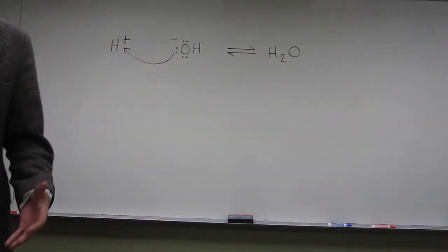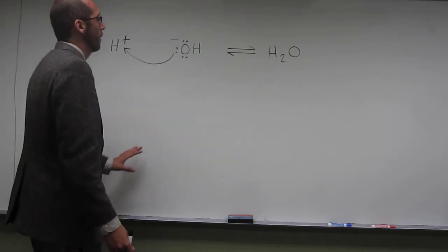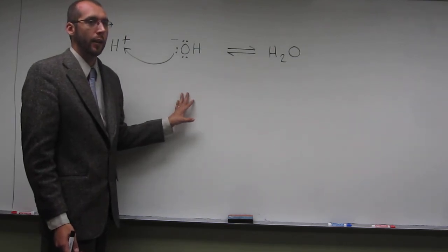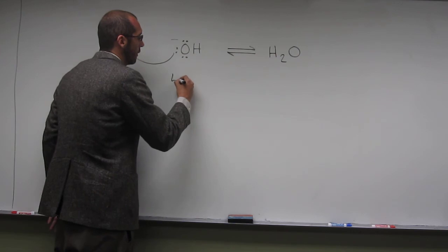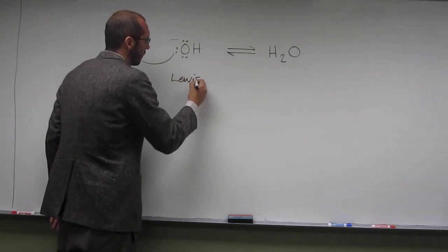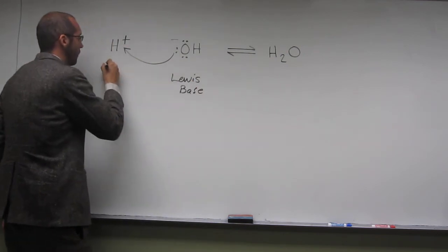And we want to identify which one of these particles is the Lewis acid and Lewis base. Well, remember, the Lewis base has the electrons and the Lewis acid doesn't. So, this would be the Lewis base, and this would be the Lewis acid.